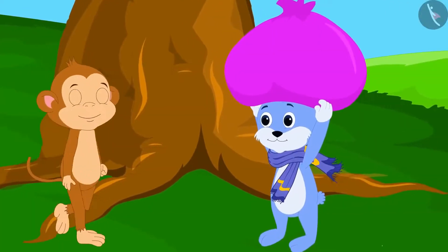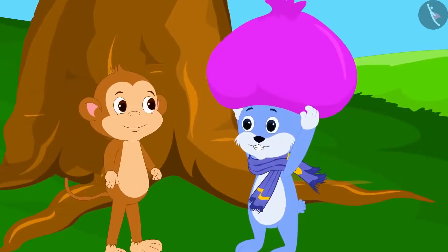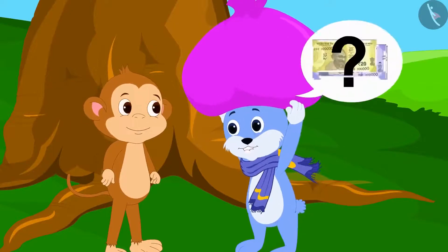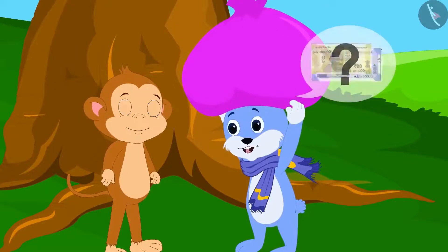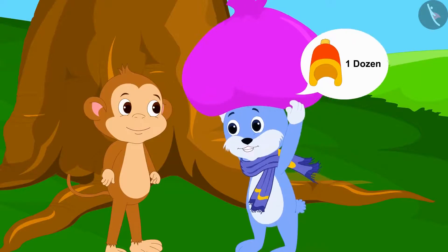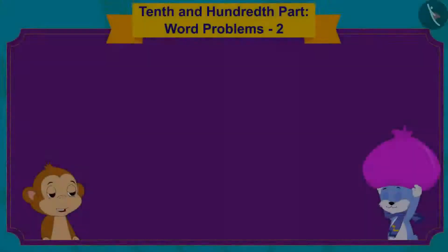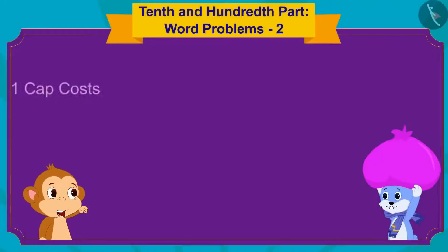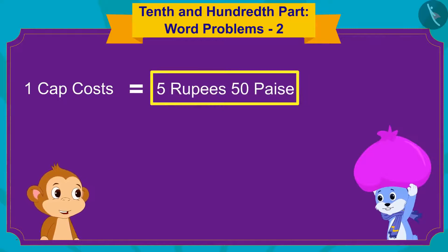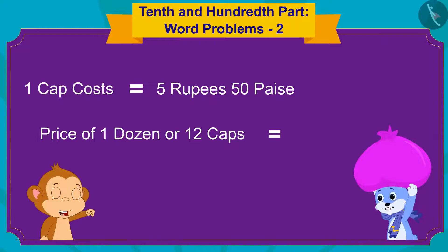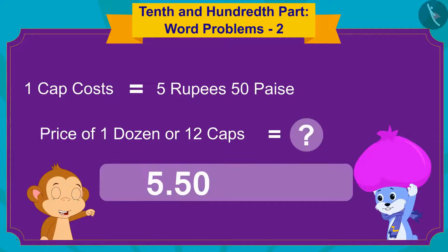Just then, Babban was passing by. Bunny stopped Babban and asked him: how much money will I get for one dozen caps if I sell one cap for 5 rupees and 50 paise? Babban replied: it is very easy. A cap costs 5 rupees and 50 paise. To find the price of a dozen, or 12 caps, we have to multiply the price of one cap by 12.